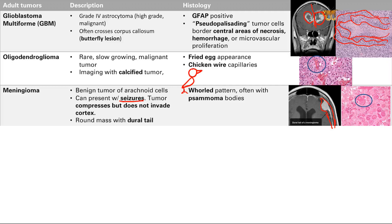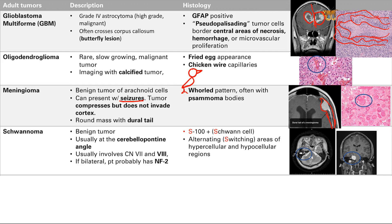Meningioma is one of the tumors with psammoma bodies on histology. Next is the schwannoma, from Schwann cells. This is a benign tumor usually at the cerebellopontine angle — basically just where the cerebellum at the back of the brain and the pons meet — and it usually involves cranial nerve 7 or cranial nerve 8, though it can involve any peripheral nerve because Schwann cells myelinate the peripheral nervous system. If you see bilateral tumors, the answer is going to be NF2.